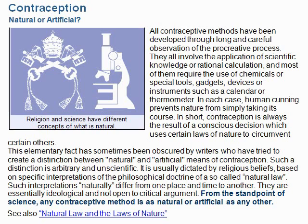This elementary fact has sometimes been obscured by writers who have tried to create a distinction between natural and artificial means of contraception. Such a distinction is arbitrary and unscientific. It is usually dictated by religious beliefs based on specific interpretations of the philosophical doctrine of a so-called natural law.